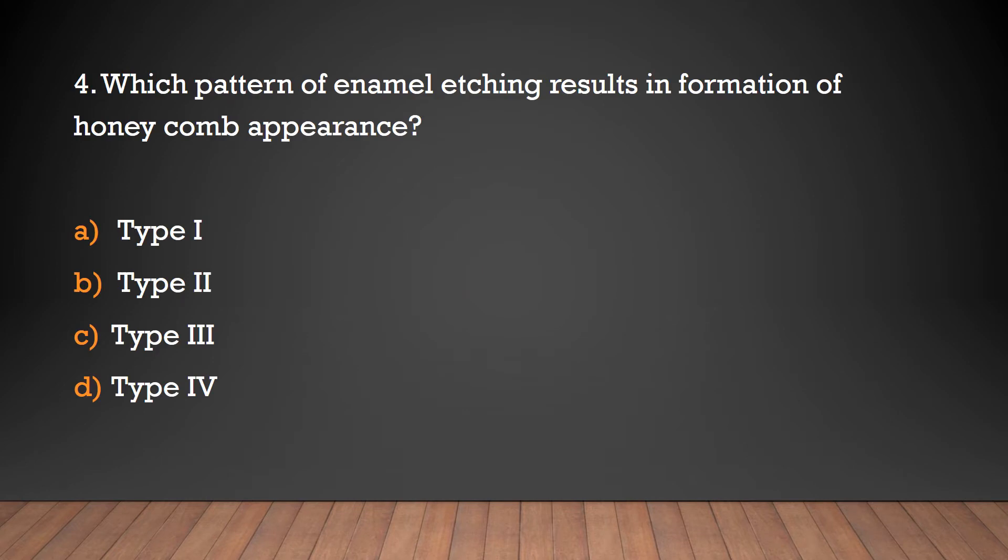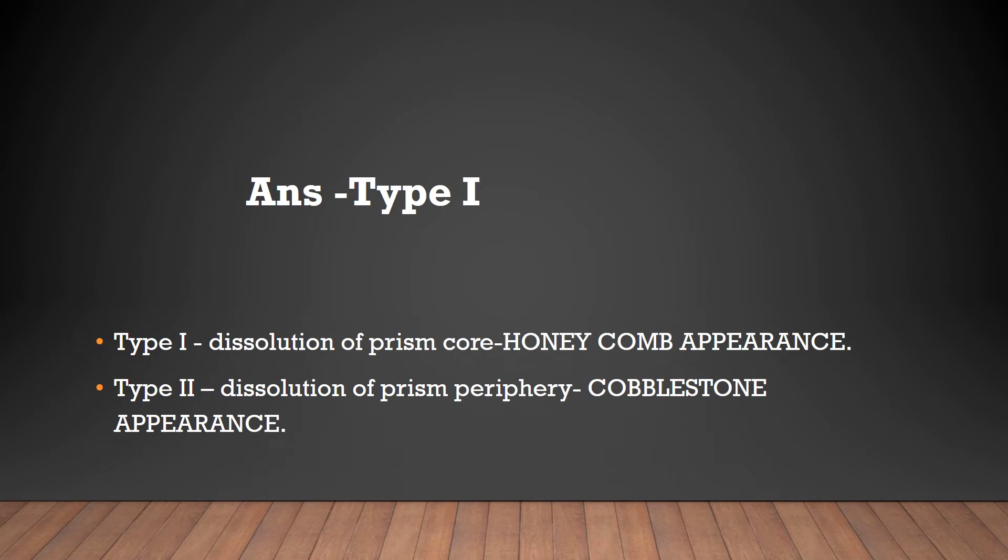Which pattern of enamel etching results in formation of honeycomb appearance? Type 1, Type 2, Type 3, Type 4. Type 1 enamel etching pattern results in honeycomb appearance. Type 2 results in cobblestone appearance.